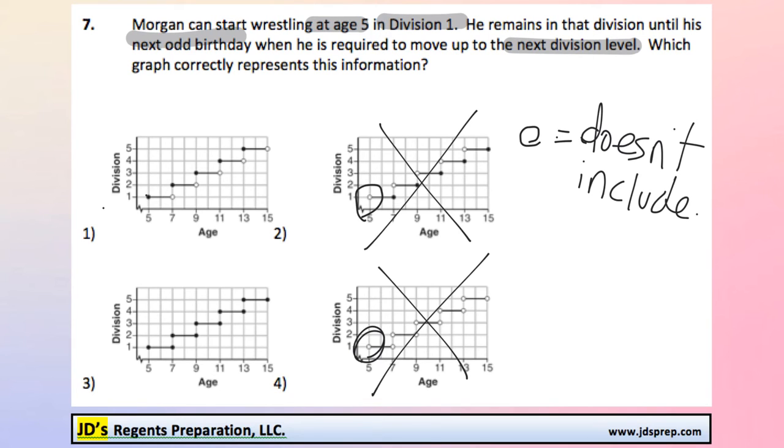Which leaves option 1 and 3. Now, there's an issue with what's going on in option 3. Because we have two closed circles at the same spot. This implies that on Morgan's birthday, he could choose to be in division 1 or division 2.